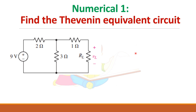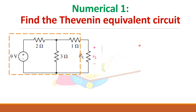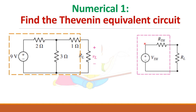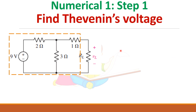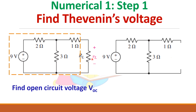Now let us do some problems and draw the Thevenin equivalent circuit. First, find the Thevenin equivalent circuit for the circuit given here. RL is specified and you have to find the Thevenin equivalent circuit — the Thevenin voltage and Thevenin resistance. First, let us find what is the Thevenin voltage, which is the open circuit voltage. So first remove the load, and find the voltage here. Find the current through this circuit.